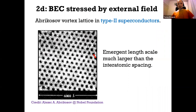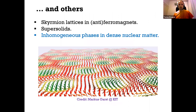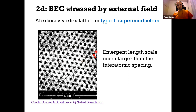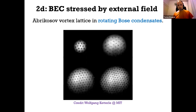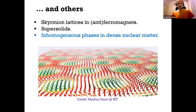When you break parity you can add a Dzyaloshinskii-Moriya term to the free energy, which being first order in derivatives necessarily drives the system into non-uniform order. Moving to 2D: if you have a Bose-Einstein condensate subjected to rotation you can get a lattice of vortices — an emergent lattice with spacing much longer than the underlying length scale of the system. Similar structures appear in superconductors in an external magnetic field. One can also have skyrmion lattices in ferromagnets or antiferromagnets, or supersolid-type order.